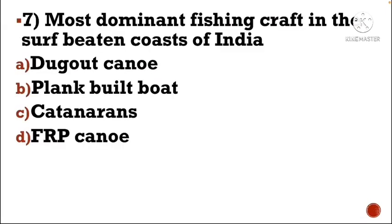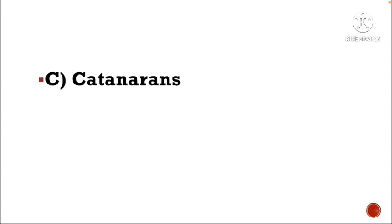Next question: Most dominant fishing craft in the surf-beaten coast of India — Option A: dugout canoe, Option B: plank built boat, Option C: catamaran, Option D: FRP canoe. The correct answer is Option C, catamaran.